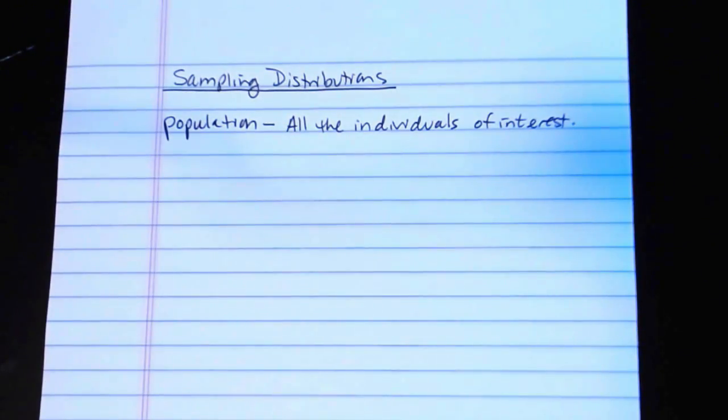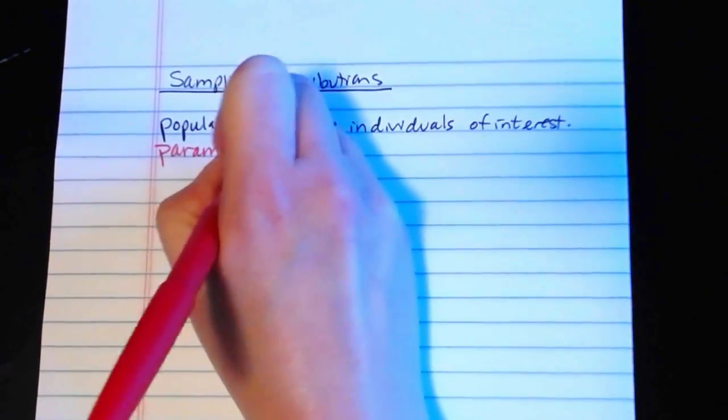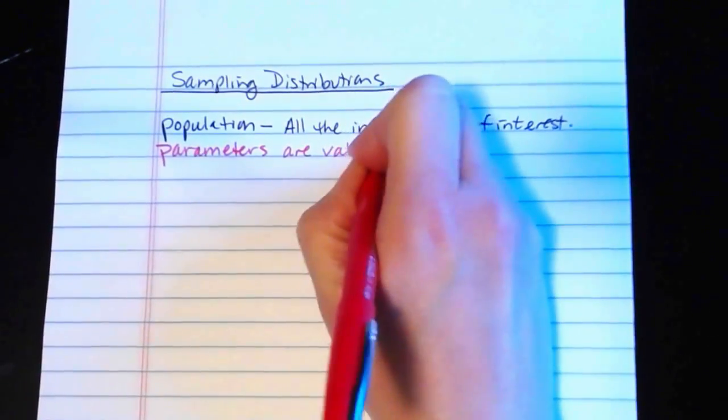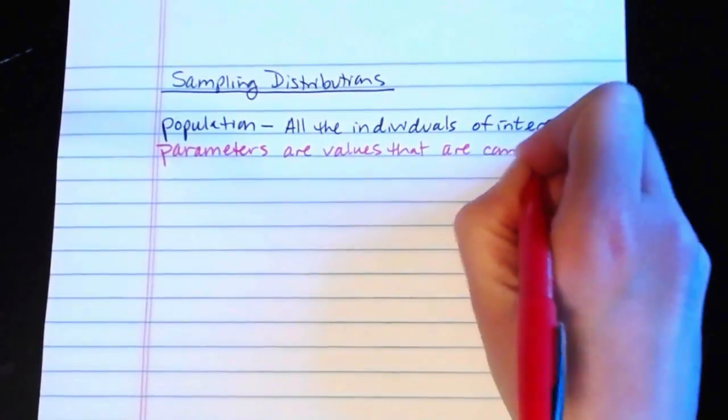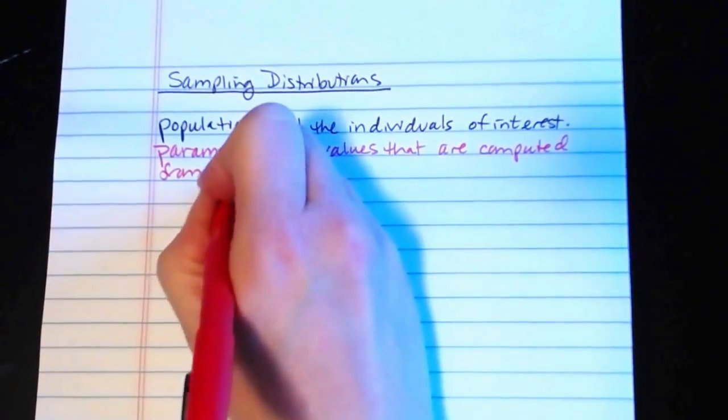Also recall that if we have a value that we've computed from population data, for example if we had a bunch of individuals in a population and we computed their average age, we would call that value a parameter. So parameters are values that are computed from population data.